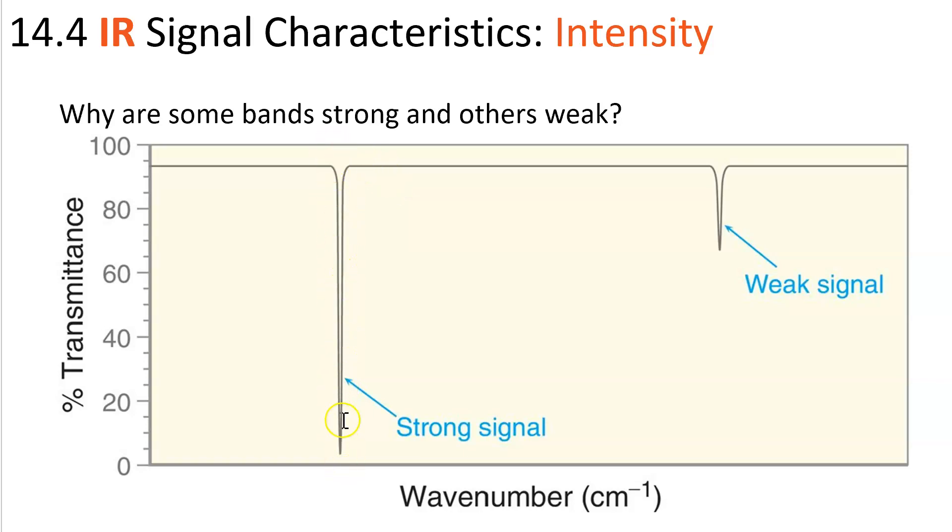Absorption bands that are tall absorb a lot of light. That corresponds to a strong signal. Short absorption bands are just absorbing a small amount of light. That's a weak signal. Why the difference? Why are some bands strong absorbers and some bands weak absorbers?